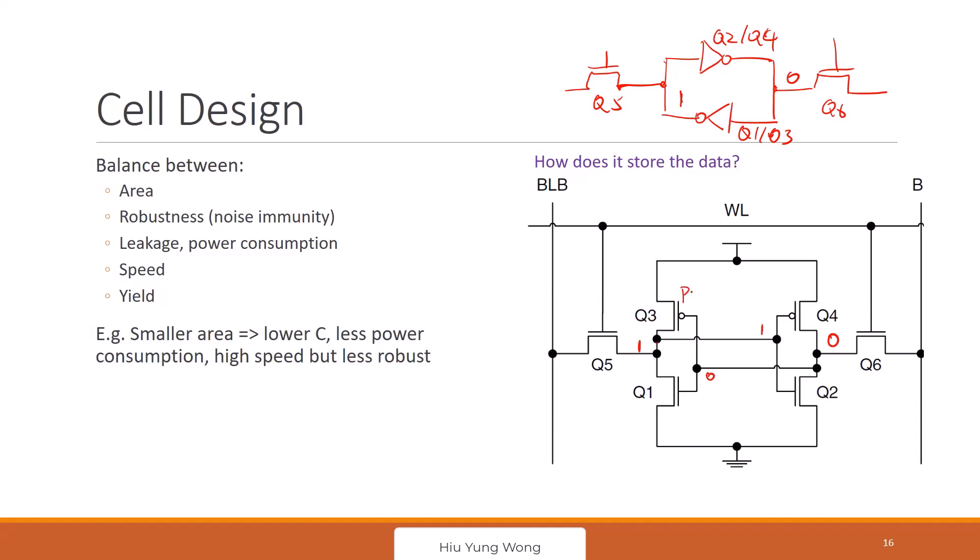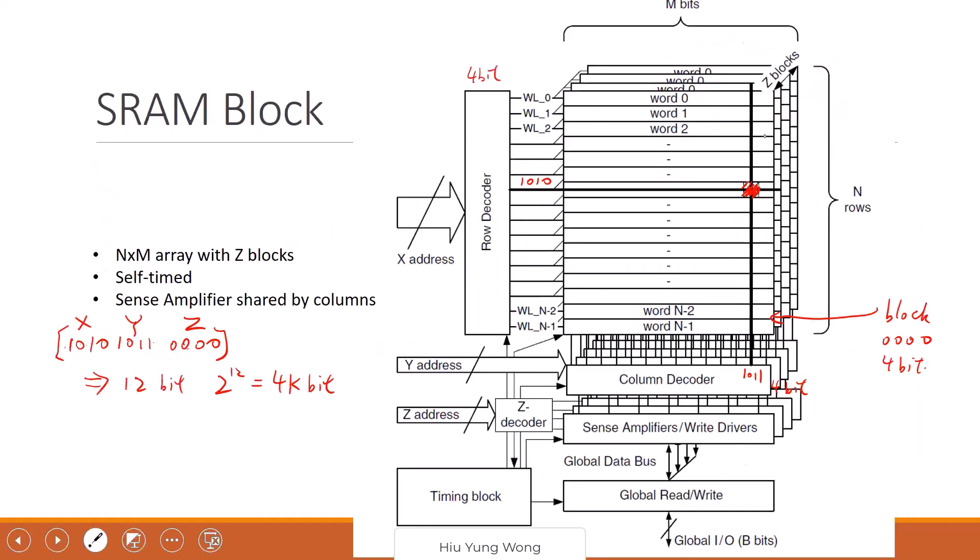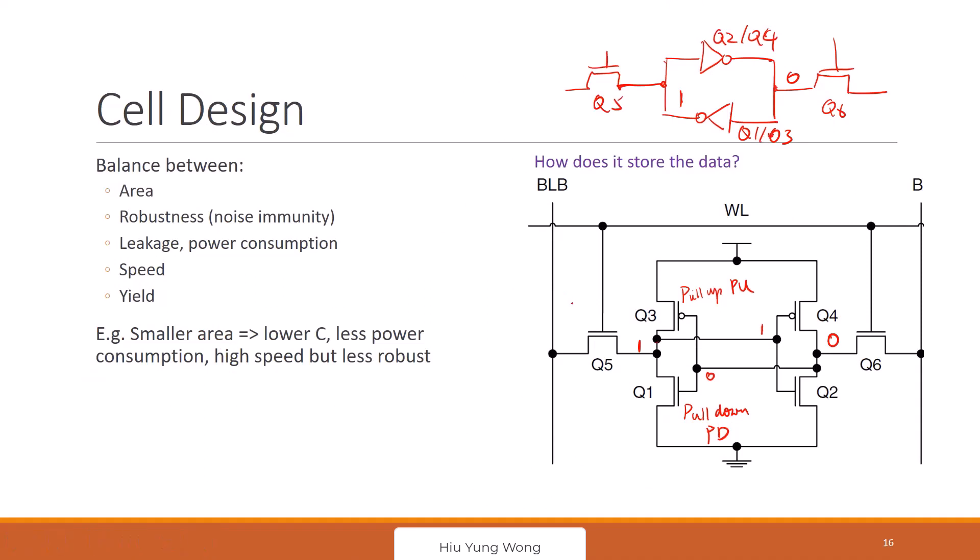So what do we call? We call this pull-up transistor. We call the NMOS pull-down. It is easy to understand. Because when NMOS is on, you pull the value to 0. When the PMOS is on, you pull the value to 1. Pull-up, pull-down. Then what is Q5 and Q6? This is something we use to access the transistor. You store it, how do I read it? And how do I write it? So we call this the access transistor.